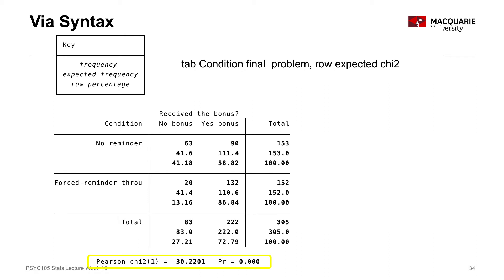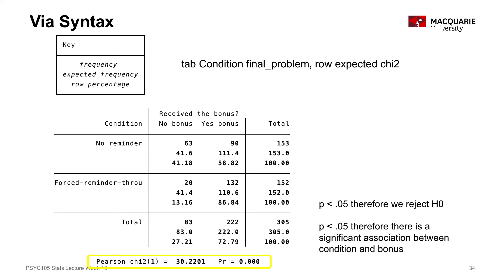Looking at this statistical test, we have quite a large Pearson's chi-square value of 30.22, with a very small p-value. Because our p-value is less than 0.05, we can reject our null hypothesis — the null hypothesis meaning no association between the two variables. The probability of obtaining a test statistic of 30.22 if the null hypothesis were true is very, very small. Therefore, we can conclude there is probably an association between the variables in the population, specifically a significant association between condition and whether somebody received the bonus.